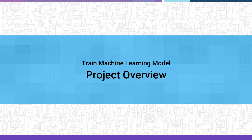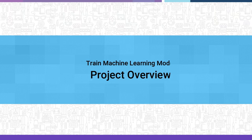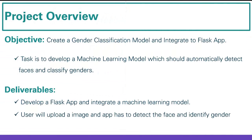Hello everyone, welcome back to the machine learning module. In this tutorial, we will discuss the project overview — what we are going to create in machine learning. The main objective of this project is to create a gender classification model which is integrated with a Flask app, meaning you have to create a machine learning model that classifies a male or female.